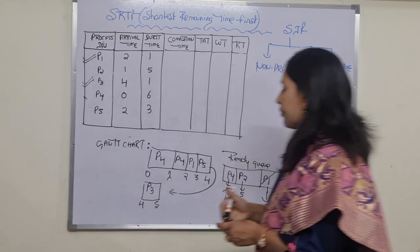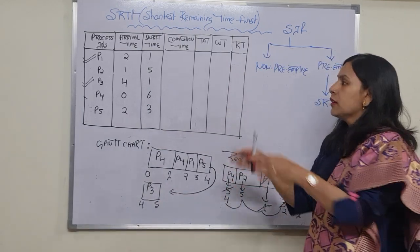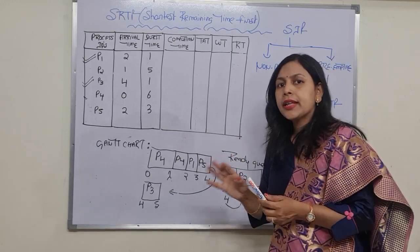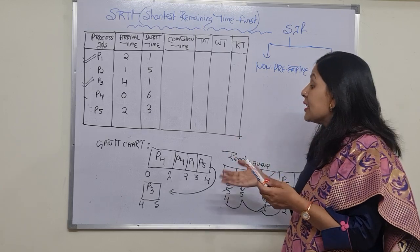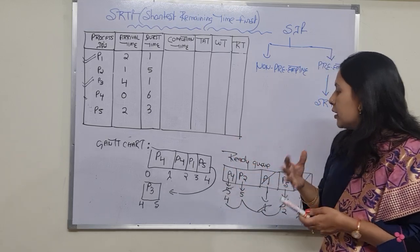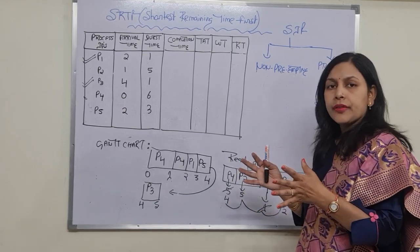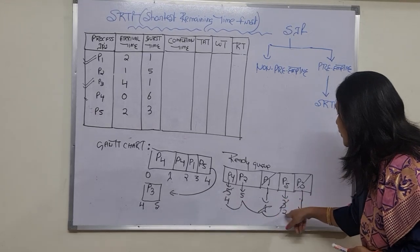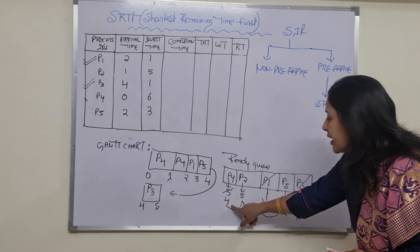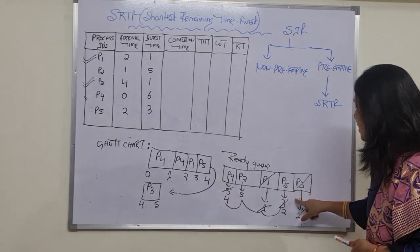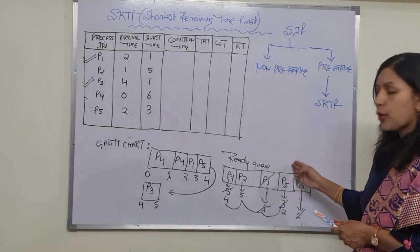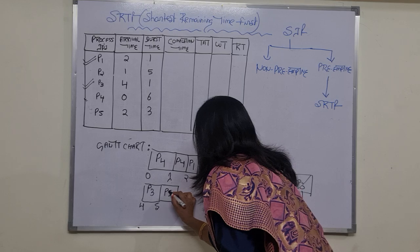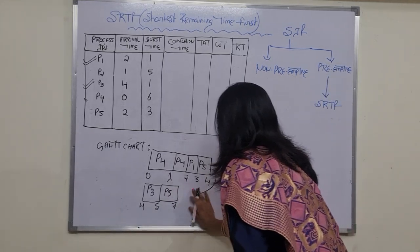We compare all processes: remaining times are P4=4, P2=5, P5=2, P3=1. Process P3 has the shortest burst time, so P3 runs from time 4 to 5 and completes entirely. Now all processes have arrived. Among the remaining processes — P4 (remaining 4), P2 (remaining 5), P5 (remaining 2) — process P5 has the shortest, so P5 runs from time 5 to 7 and completes.